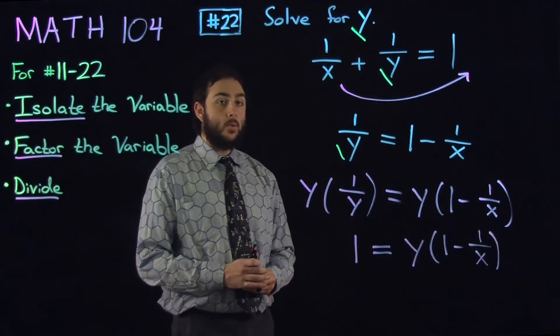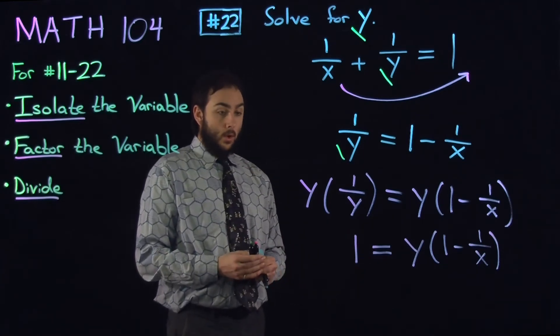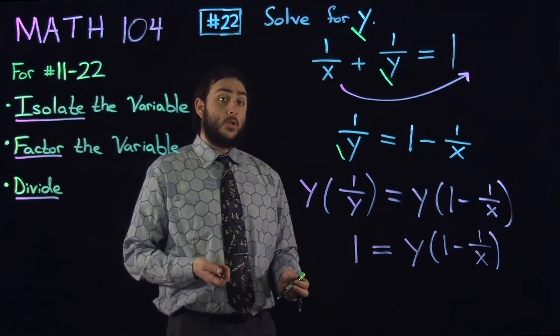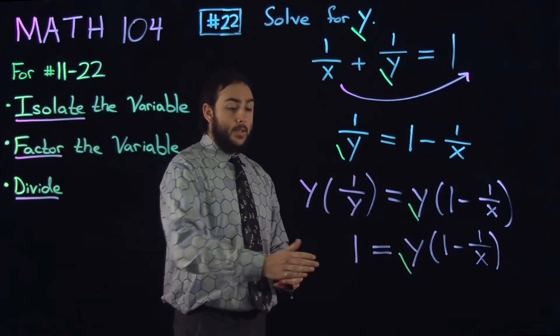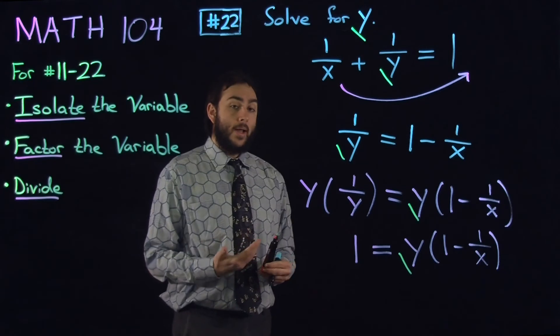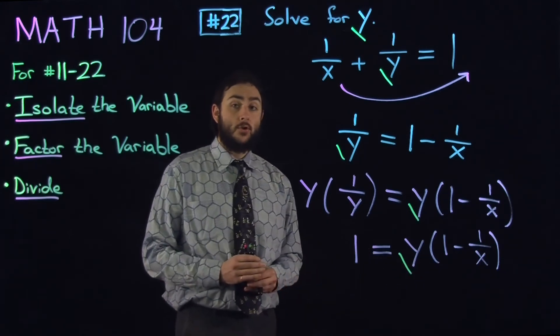Now, at this point, it's worth asking ourselves, do we want to distribute this y or not? Well, our goal in the problem is to solve for y, to get y by itself. And as it is in this equation, y is sort of neatly factored out of this term. So we don't want to distribute.